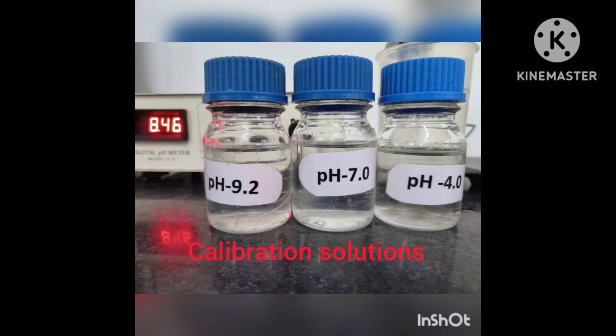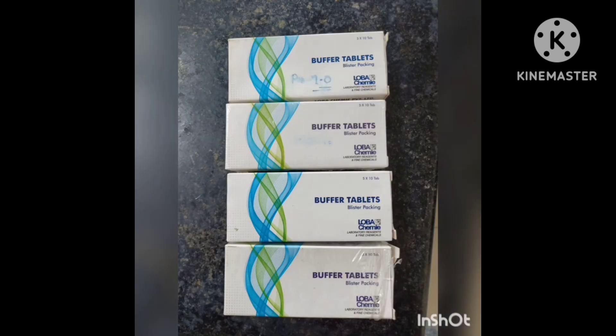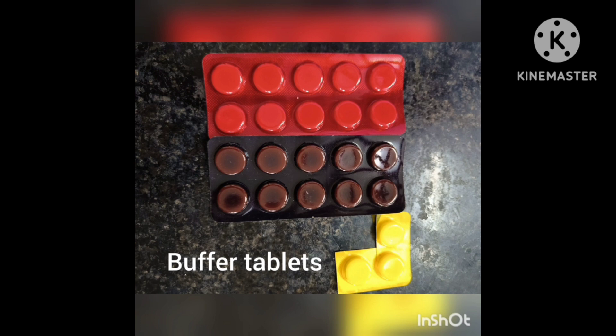pH meters need to be calibrated periodically to ensure that they are giving accurate readings. This is typically done using a solution of known pH, which is called a calibration solution. For this calibration or for making the calibration solution, we use buffer tablets of pH 9, 7, or 4.